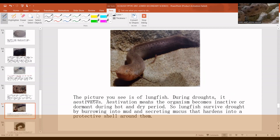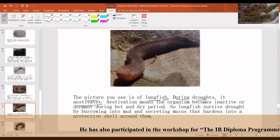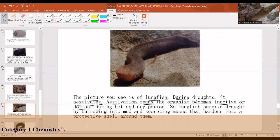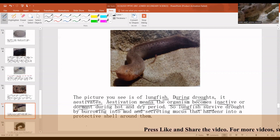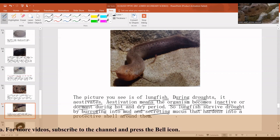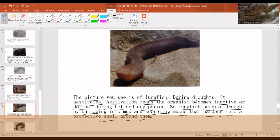This picture you see is of lungfish. Lungfish during droughts estivates. Estivation means the organism becomes inactive or dormant during hot and dry seasonal periods. So lungfish survive drought by burrowing into mud and secreting mucus. The mucus hardens into a protective shell around them.